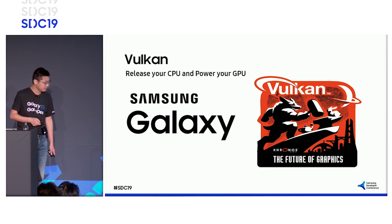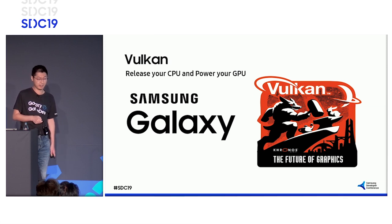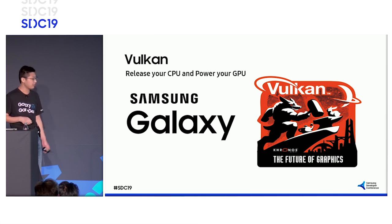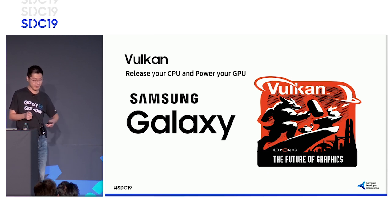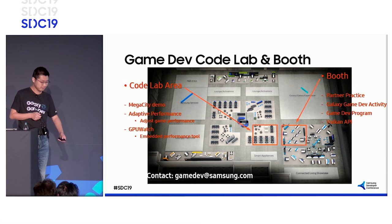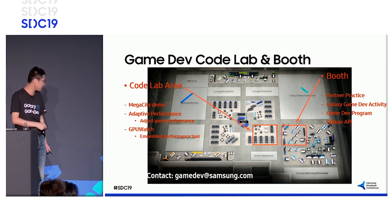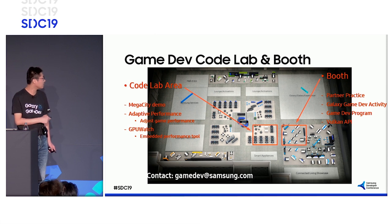We have come to the end of today's session. With Vulkan, we can explicitly control both the CPU and the GPU. There are various ways to reduce CPU cost and also to optimize your GPU. Vulkan is the next-generation graphics API, and we look forward to you joining us. Thank you. If you have any questions, please feel free to contact us by email, or come to our booth and codelab area for further discussions.